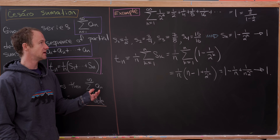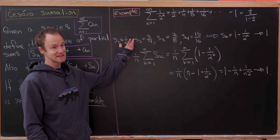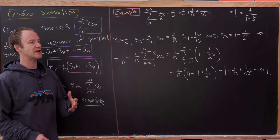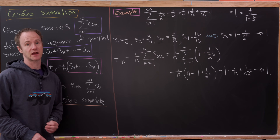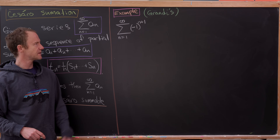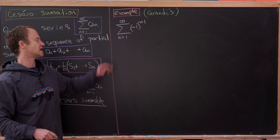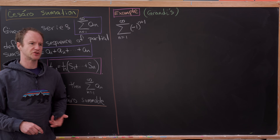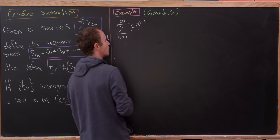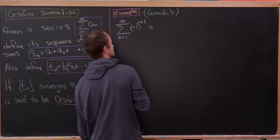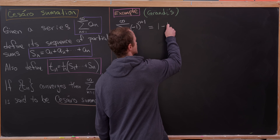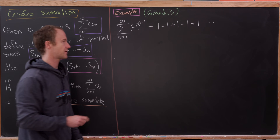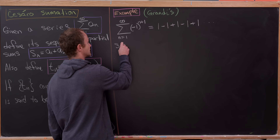So via this example, we've shown that the sequence of partial sums and this related sequence have the same limit — everything that should happen is happening. Now let's look at another example where our original series does not converge. For our next example, we'll look at something called Grandi's series: the sum as n goes from 1 to infinity of (−1) to the n plus 1. This diverges simply from a geometric series test, but we'll also show it diverges using partial sums. This looks like 1 minus 1 plus 1 minus 1 plus 1, and so on.